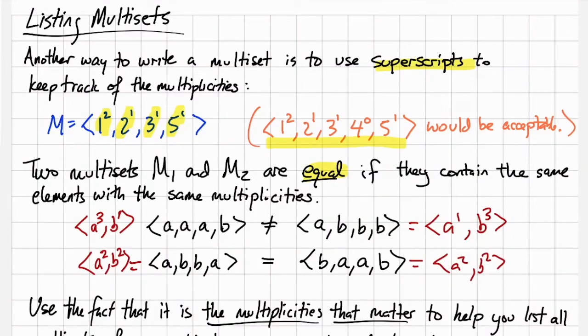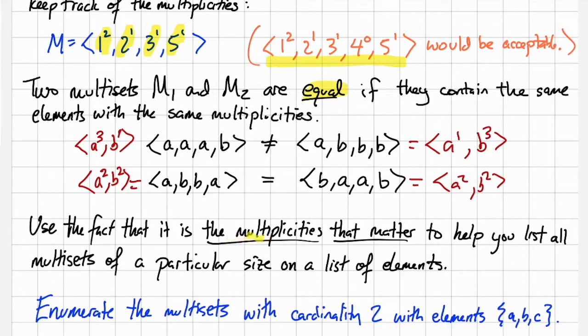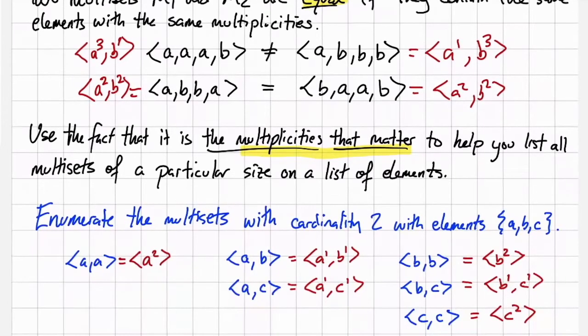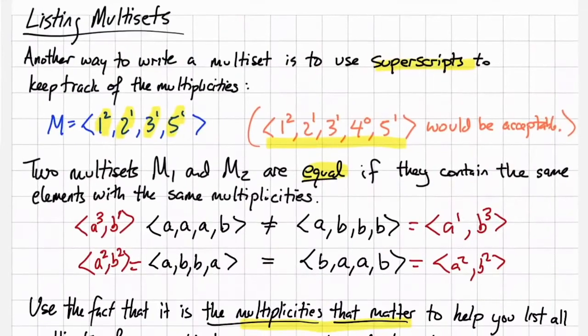So if our task is to enumerate multisets, this can be helpful. You can use the fact that multiplicities matter to help you list the multisets of a particular size. For example, let's say we needed to enumerate the multisets with cardinality 2 with elements in the set ABC. The set of such multisets are AA, AB, AC, BB, BC, and CC, which have been partitioned into those that have two A's, those that have one A, and those that have zero A's.